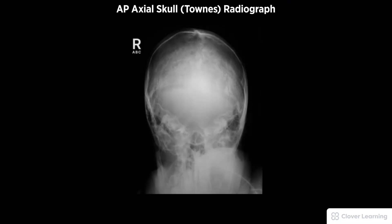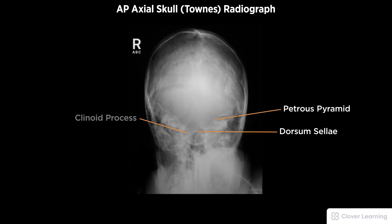A diagnostic AP Axial Skull Towne's view radiograph must be free of motion and rotation. Demonstrated anatomy includes symmetric petrous pyramids, dorsum sellae, and posterior clinoid processes visible within the foramen magnum, with proper visualization of soft tissue and bony detail.